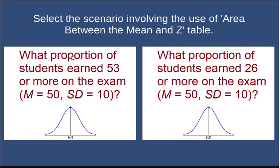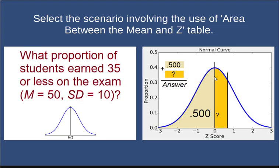On the left, it says: what proportion of students earned 53 or more? That's less than half the distribution, so I can just pick the answer on the right because it's always going to be one or the other.